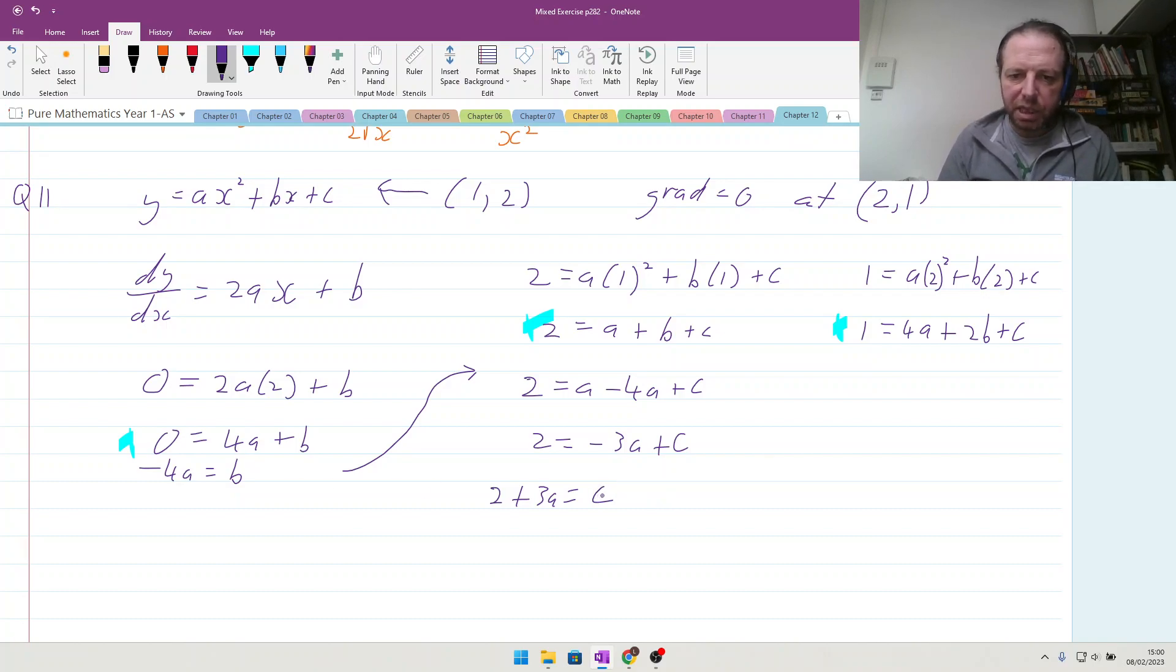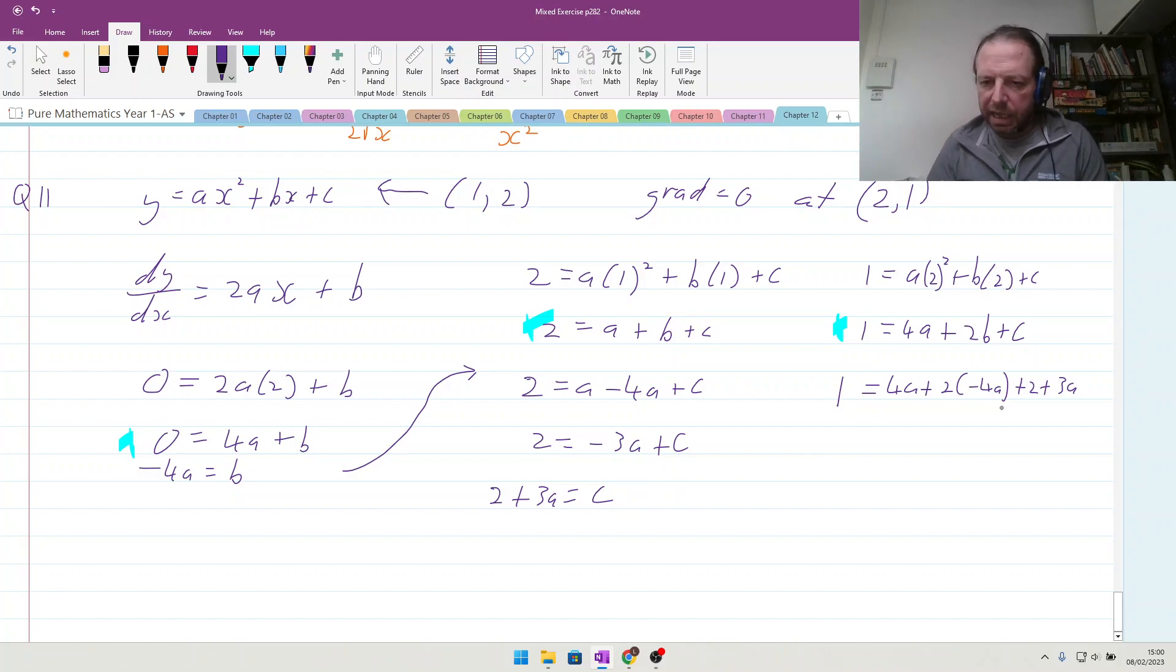So now I've got a value for b and a value for c. So when I come over here I can say that 1 is equal to my value for a, 4a plus 2 lots of b, 2 lots of minus 4a plus 2 plus 3a coming from down here. So that looks like an equation that only has a in it. So I can say that 1 equals 4a plus minus 8a plus 2 plus 3a. 4, 5, 6, 7 take away 8 minus a and we've got just the 2 here, bringing it across to that side minus 1, so therefore a equals 1.